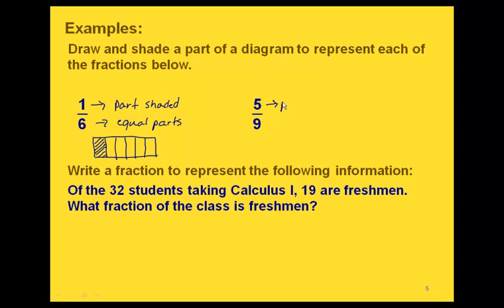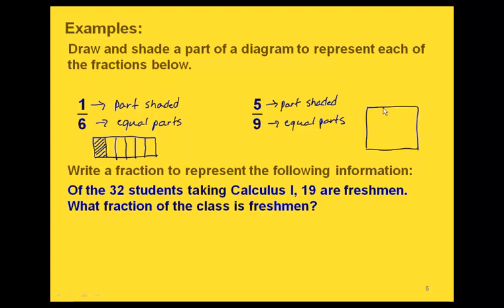For 5 ninths, we have 5 for our numerator — that's the part that's shaded. We have 9 for our denominator, so that's the number of equal parts we want to have in our picture. Let's do this one as a big square. So here we have 9 equal parts, and to represent this fraction, we're going to shade 5 of them: 1, 2, 3, 4, 5.